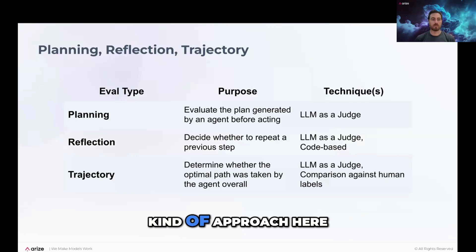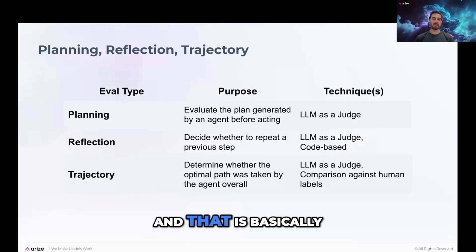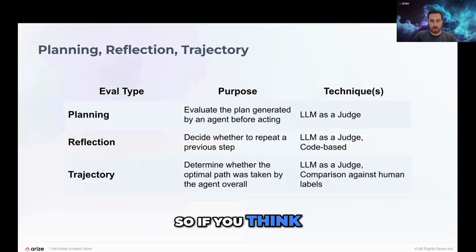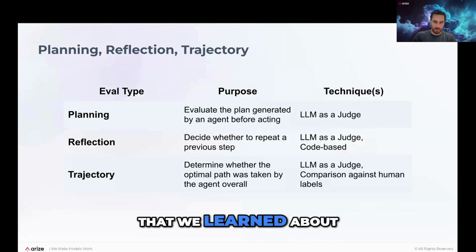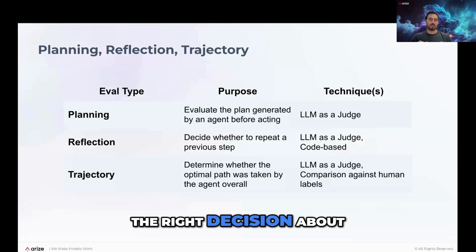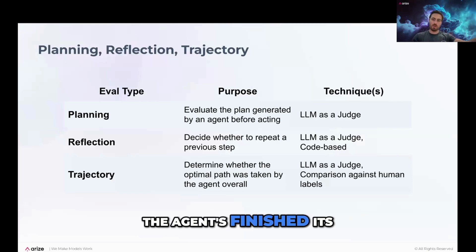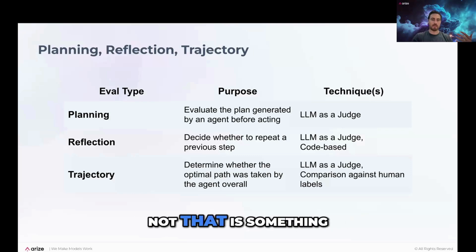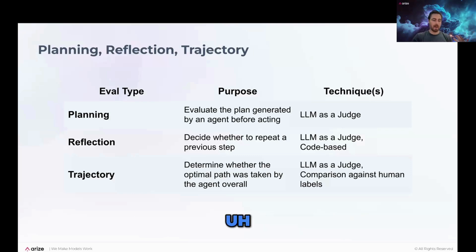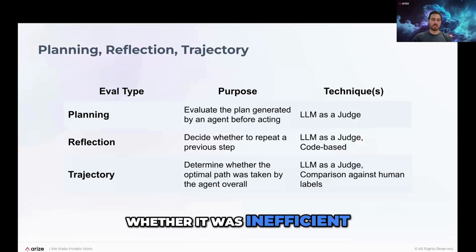Trajectory is the third technique. It's basically looking at the overall path the agent took. If you think about routing evals, those are good at deciding whether at a given moment the agent makes the right decision on which step to go down. With trajectory, you're looking after the agent has finished its whole execution — you're looking at all the steps it took and deciding whether that was the optimal path, whether it repeated steps it didn't need to, or whether it was inefficient.